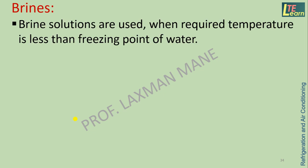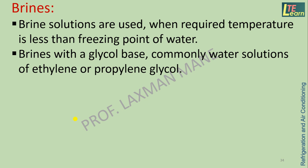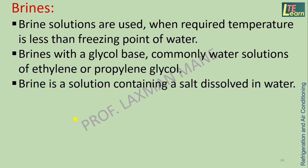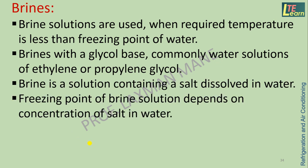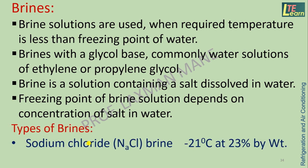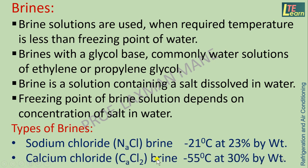Brine solutions are used as secondary refrigerants when the required temperature is less than the freezing point of water. Brines with a glycol base — commonly water solutions of ethylene or propylene glycol — are used. Brine is a solution containing salt dissolved in water. The freezing point of brine solution depends on the concentration of salt in water. For example, sodium chloride brine at 23% concentration by weight gives a temperature of −21°C, and calcium chloride brine at 30% concentration by weight gives −55°C.